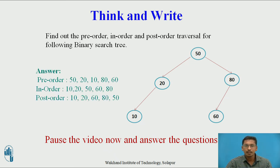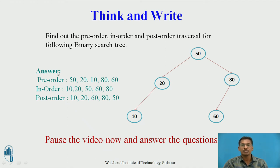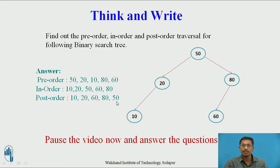Here is the answer. The pre-order traversal of this binary search tree is: 50, 20, 10, 80, 60 — visiting root first, then left subtree, then right subtree. The in-order traversal is in ascending order: 10, 20, 50, 60, 80. And the post-order traversal is: 10, 20, 60, 80, 50 — where 50 is the root and appears last.